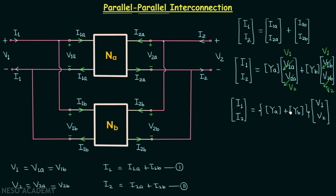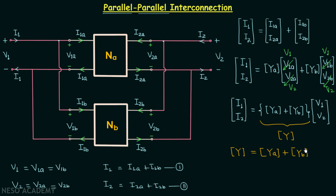This is the matrix form of the equations for the larger two-port network. Therefore, YA plus YB equals the Y parameters matrix of the larger two-port network. So the Y parameters matrix of the overall network equals the Y parameters matrix of network NA plus the Y parameters matrix of network NB. For N two-port networks connected in parallel-parallel connection, the Y parameters matrix of the overall network equals the sum of the Y parameters matrices of all the networks.